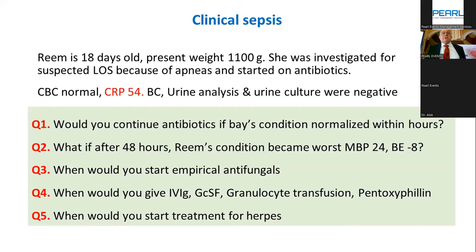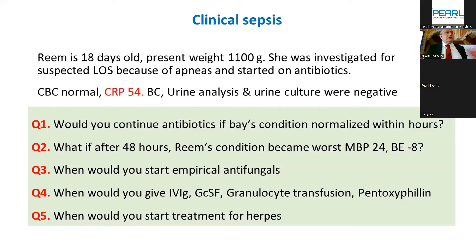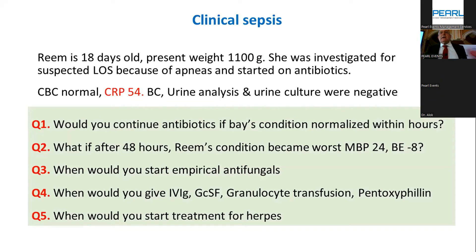Ideally, check CBC and CRP around day three to confirm inflammatory marker normalization, then stop antibiotics by day five. Randomized trials have shown that treating clinical sepsis for longer than five days increases the rate of mortality and NEC. If the patient hasn't improved, inflammatory markers may persist up to seven to ten days, but avoid going too far with antibiotics for what you call bracket clinical sepsis.